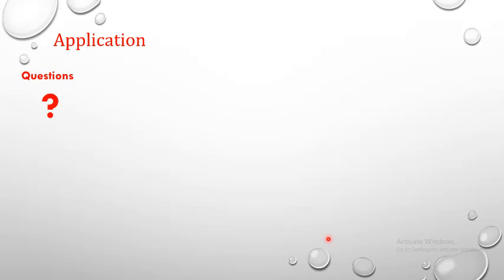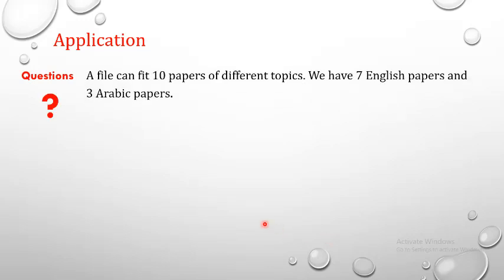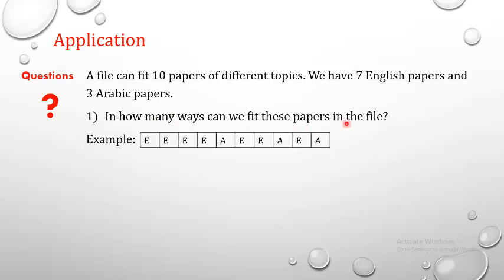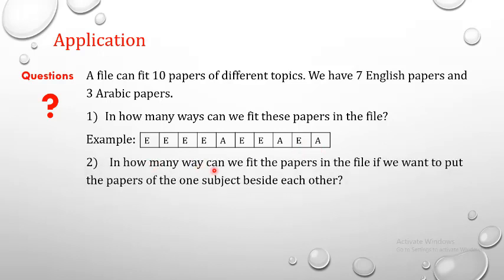Here we have an application. A file can fit 10 papers of different topics: 7 English papers and 3 Arabic papers — pay attention, they are of different topics. First question: in how many ways can we fit these papers in a file? Second question: in how many ways can we fit the papers if we want to put the papers of one subject beside each other — all English together and all Arabic together?